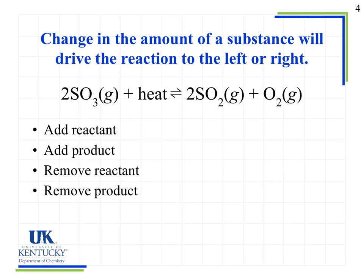Let's look at what happens if we add a reactant to the system. We have our balanced equation with heat shown as a reactant, indicating this is an endothermic process. If we add additional SO3, the system says it has too much SO3 and needs to get rid of some. So the reaction shifts to the right, forming more SO2 and more O2, because that's how it uses up the excess SO3 that was added.